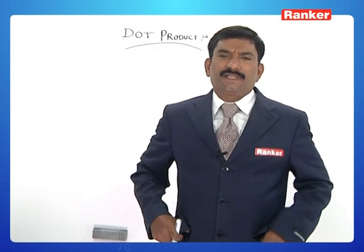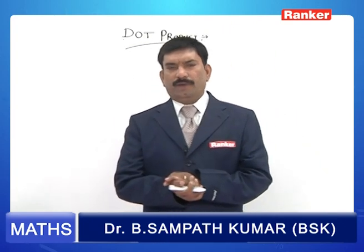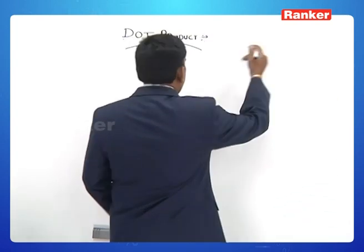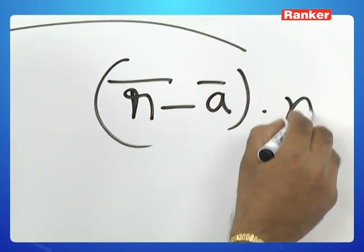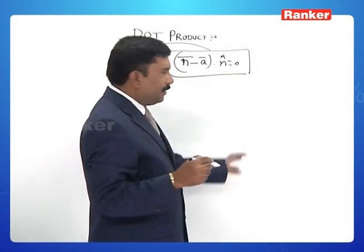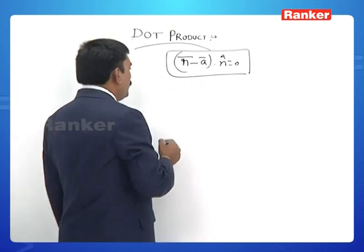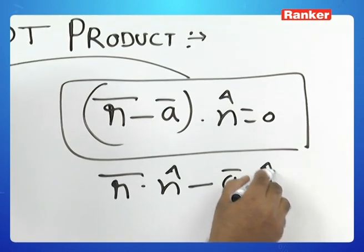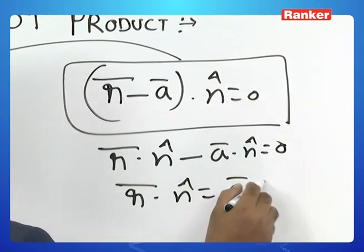Students, as we have discussed, the vector equation of a plane passing through the point ā, perpendicular to unit vector n̂ — just recollecting the concepts — is r̄ minus ā dot n̂ equals zero. This is the vector equation of a plane passing through the point ā and perpendicular to unit vector n̂. Expanding: r̄ dot n̂ minus ā dot n̂ equals zero, so r̄ dot n̂ equals ā dot n̂.